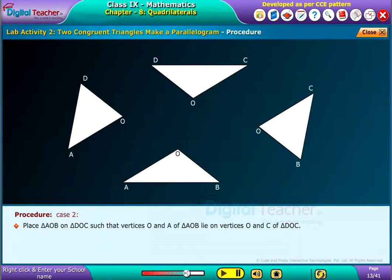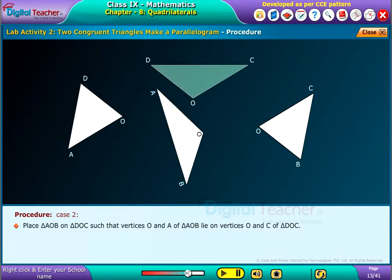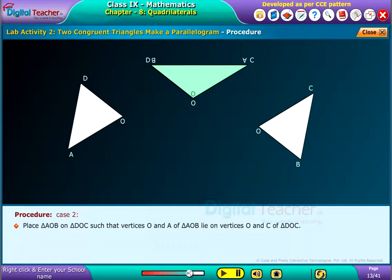Place triangle AOB on triangle DOC, such that vertices O and A of triangle AOB lie on vertices O and C of triangle DOC.